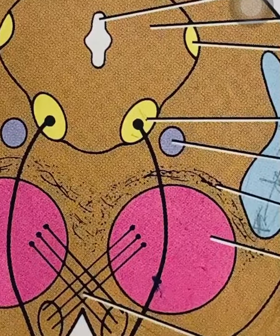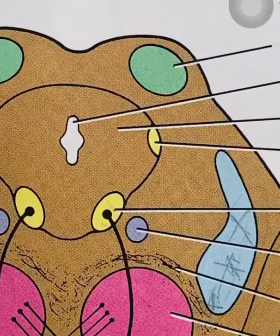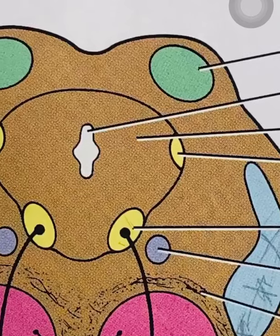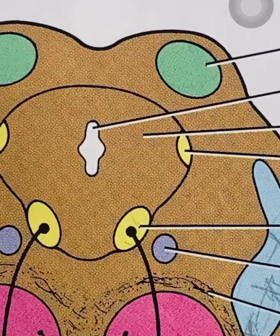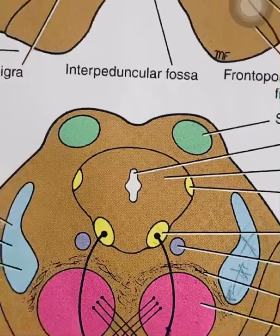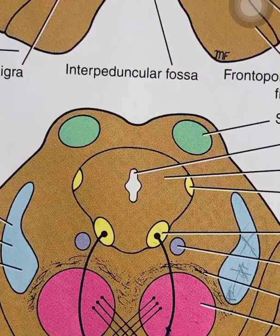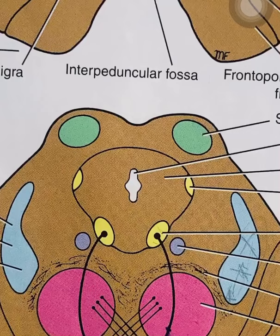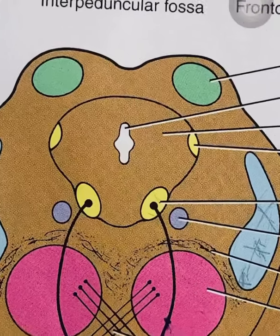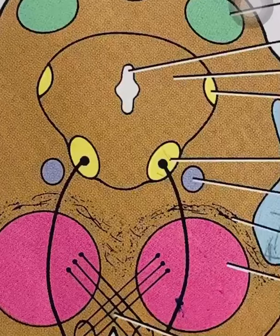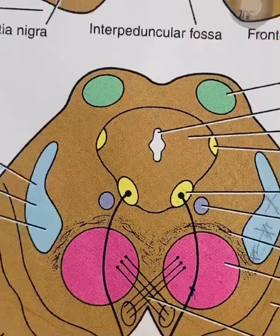The yellow color you see here represents the oculomotor nucleus. Whenever you read about the oculomotor nucleus, you should also know about the Edinger-Westphal nucleus, which is the parasympathetic component of the oculomotor nucleus.